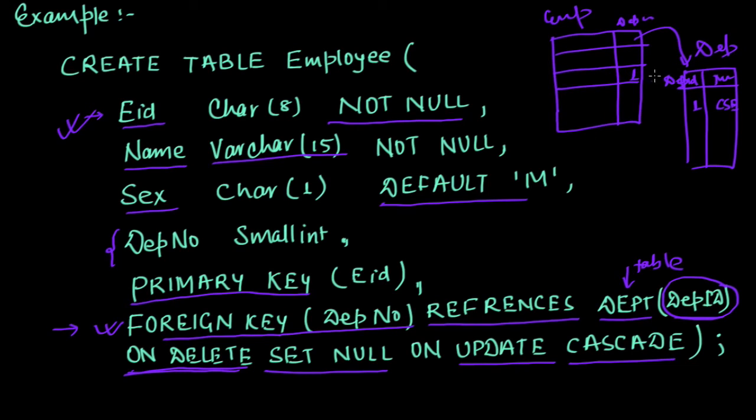Now I am updating - for CSE I am updating one to let's say eleven. Then update will be cascaded, so it will also be updated and it will become eleven. But if I am deleting this value, if I am deleting CSE department, then what will happen here? It will assign this field as null.